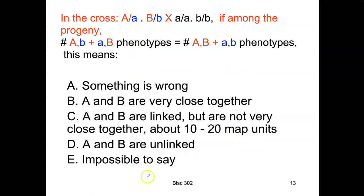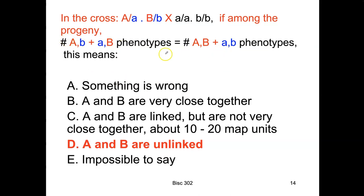Here's a clicker question — think it through, stop the tape, and make a suggestion as a self-test. You've done this cross, where the dot means we don't know if the genes are linked or unlinked. When we look at the progeny phenotypes, we see that they are all equal. The answer is that the genes are not linked, because the recombinant and non-recombinant phenotypes are approximately the same — equal amounts of each possible phenotype — so therefore the genes are not on the same chromosome.